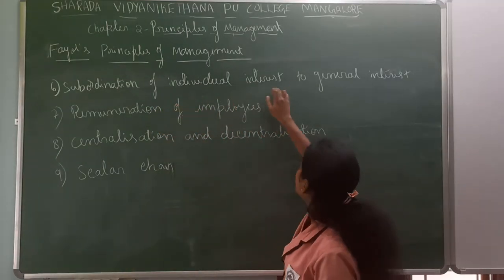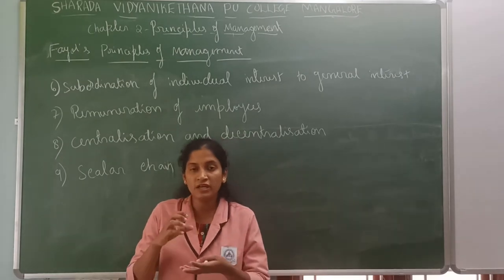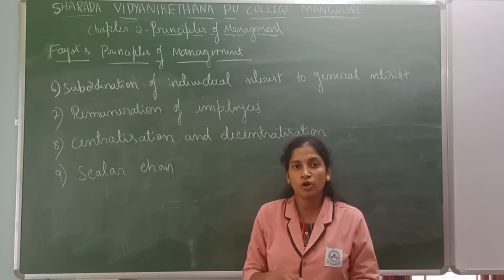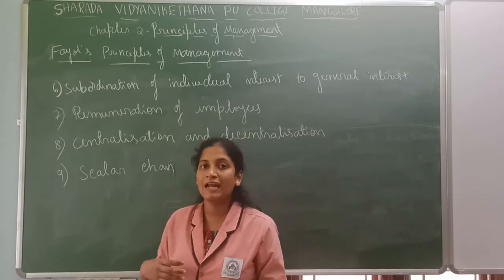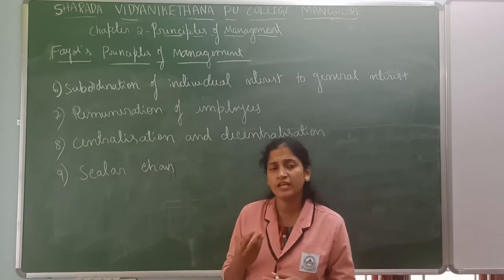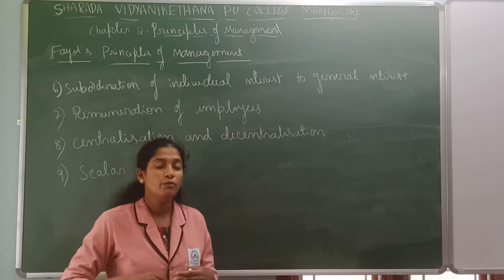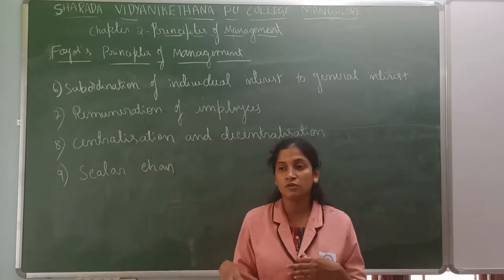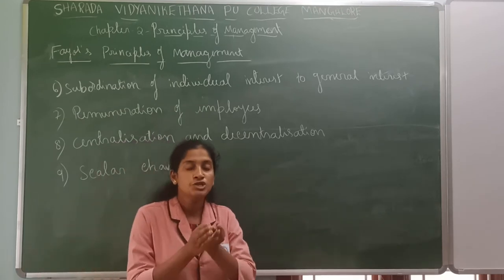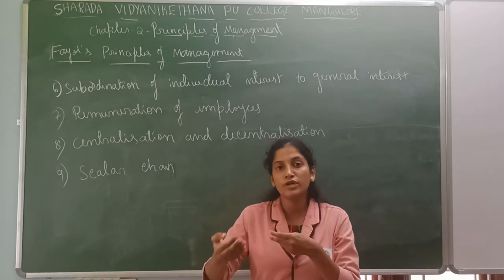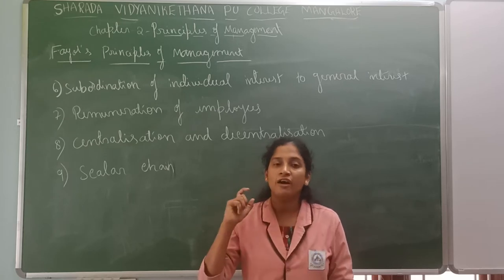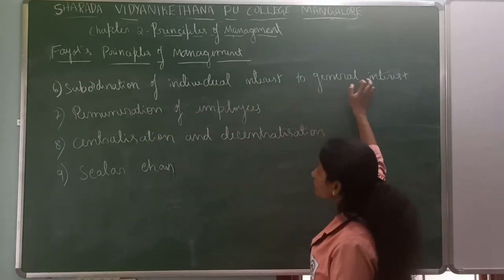The sixth principle is subordination of individual interest to the general interest. Fayol tells that everyone will have their own interest, their own goal. That goal they have to put into the general interest and work for the organization. Every individual has their own goal, and they have to bring those goals together — both subordinates and superiors — and achieve the organizational goal.